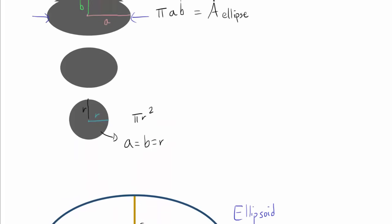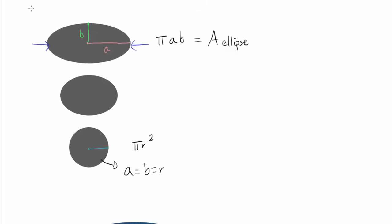Let's start with the easier one: the ellipse. Consider this transformation — we keep the b dimension the same, so this distance stays b throughout. We are pushing inward from the left and the right, squishing the ellipse such that a gets smaller and smaller until a becomes b, at which point the ellipse has been pushed into a circle.